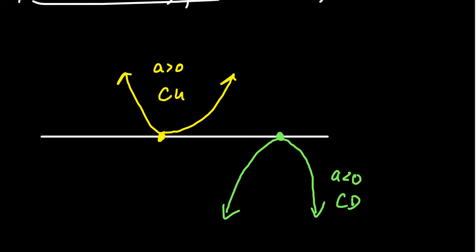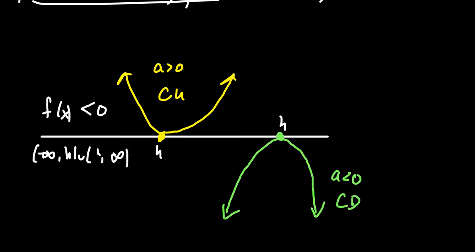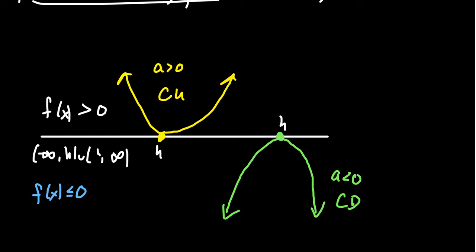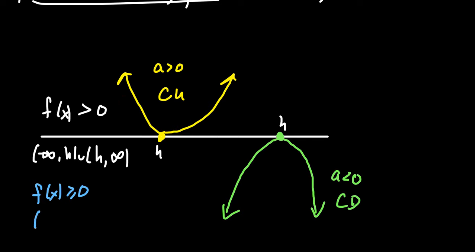If you're asking what the solution looks like when f of x is greater than 0 — since the vertex happens at h, and looking for the quadratic to be greater than 0 — your solution would look like negative infinity to h union h to infinity: everything except for h. If f of x is greater than or equal to 0, you'd want everything to the left and right of the vertex, and since you could equal 0 you get the vertex itself. In that situation, your solution set would actually be all real numbers.